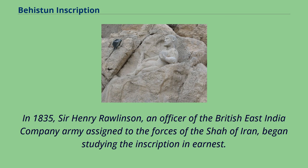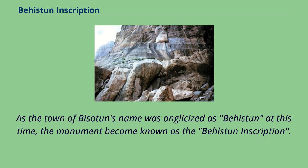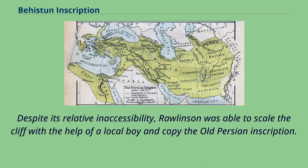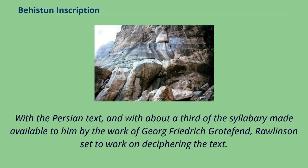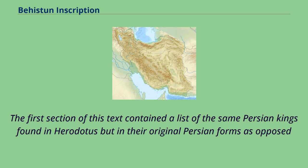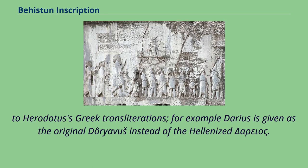In 1835, Sir Henry Rawlinson, an officer of the British East India Company army assigned to the forces of the Shah of Iran, began studying the inscription in earnest. As the town of Bisitun's name was anglicized as Behistun at this time, the monument became known as the Behistun inscription. Despite its relative inaccessibility, Rawlinson was able to scale the cliff with the help of a local boy and copy the Old Persian inscription. The Elamite was across a chasm and the Babylonian four meters above, both beyond easy reach and left for later. With the Persian text and about a third of the syllabary made available to him by the work of Grotefend, Rawlinson set to work on deciphering the text. The first section contained a list of the same Persian kings found in Herodotus but in their original Persian forms, as opposed to Herodotus's Greek transliterations.